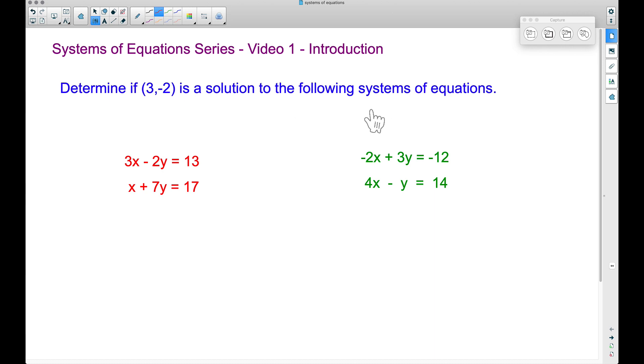We have some directions here, but let's talk about a system of equations. A system of equations, here's an example right here. We have two equations and we have two variables, an x and a y. We have another example of a system of equations over here, where we have two equations and two unknowns, an x and a y again.